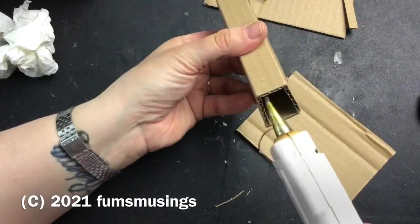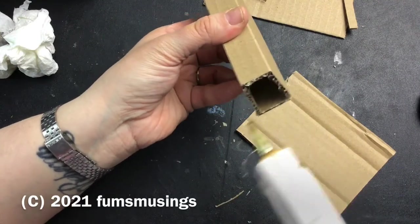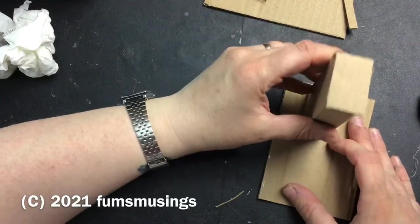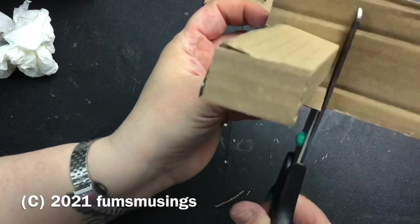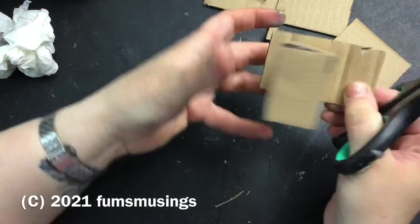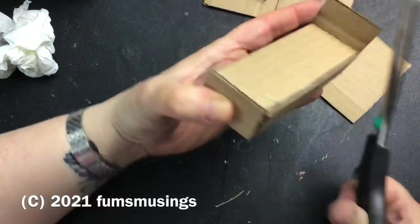Like so. So a bit of glue. And don't worry if the texture of the card is showing. We'll cover that up with the texture and stuff that we apply next. So it's not going to look like a cardboard box once it's fully decorated.